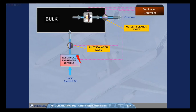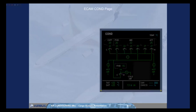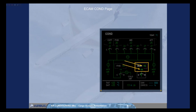Note: if installed, compartment heating is not available when the bulk cargo door is open. The bulk cargo indications are displayed on the ECAM COND page only if the heating system is installed. They are: the duct inlet temperature and the ambient temperature, and the electrical fan heater indications, which can be at C when at its lowest heating level and at H when at its highest. Note: the isolation valves and the extraction fan are not represented on the ECAM page.